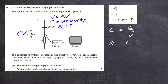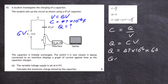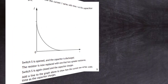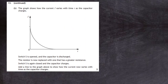Q equals C times V. Plugging in the numbers: Q = 47 × 10⁻⁶ farads × 6.0 volts, which gives 2.82 × 10⁻⁴. Remember, charge is measured in coulombs — don't confuse that with C for capacitance. To two significant figures, Q = 2.8 × 10⁻⁴ coulombs. That's your three marks.